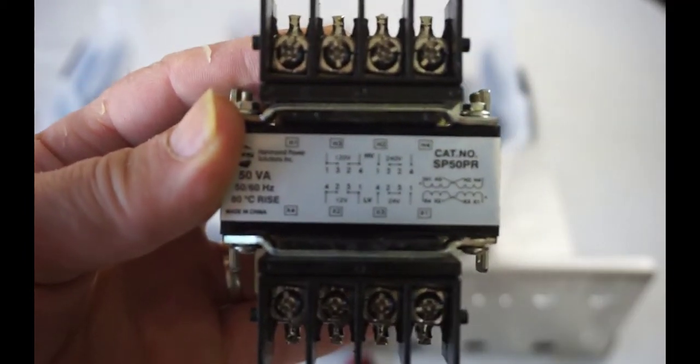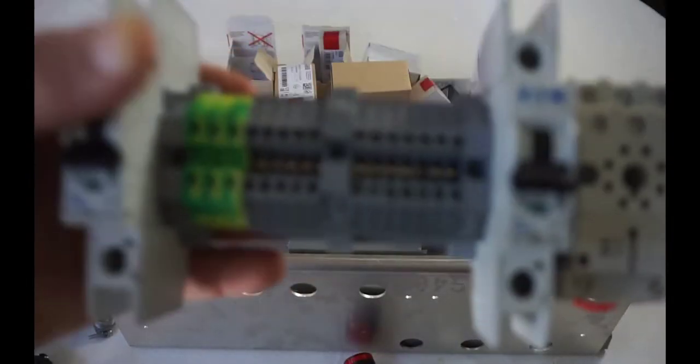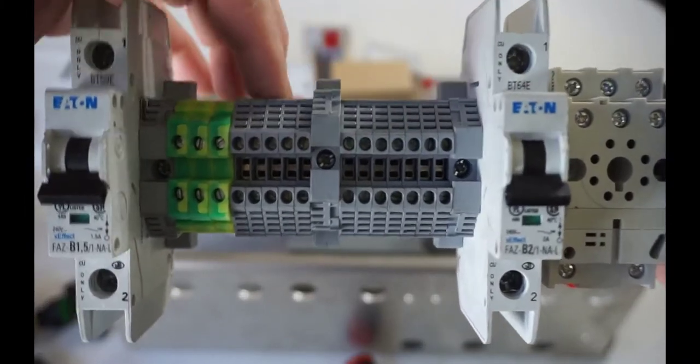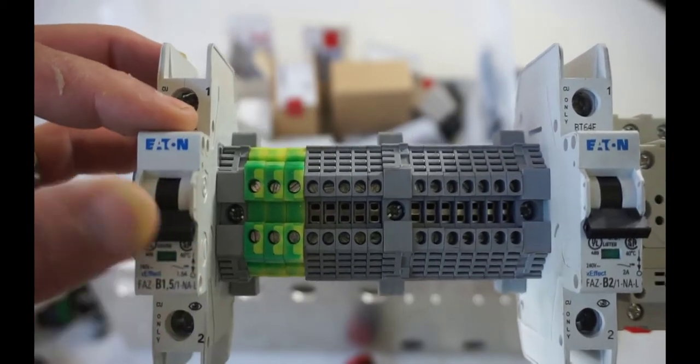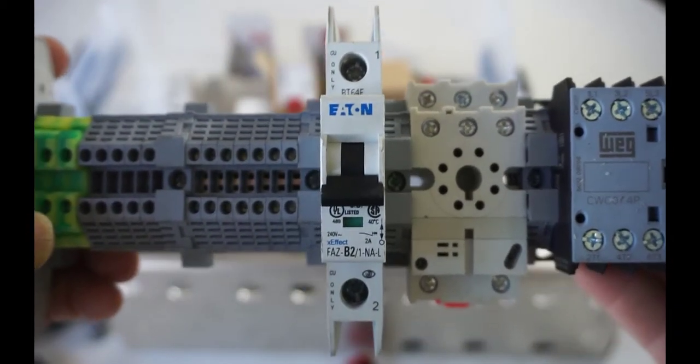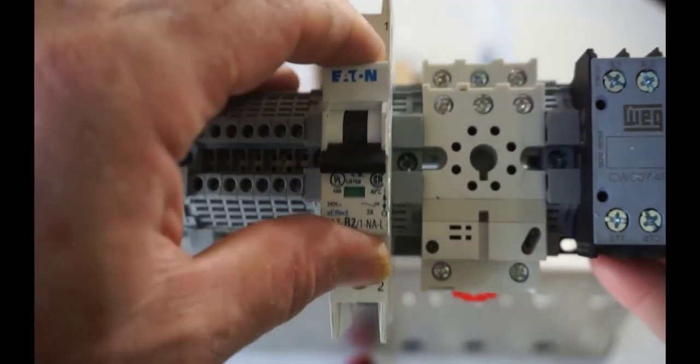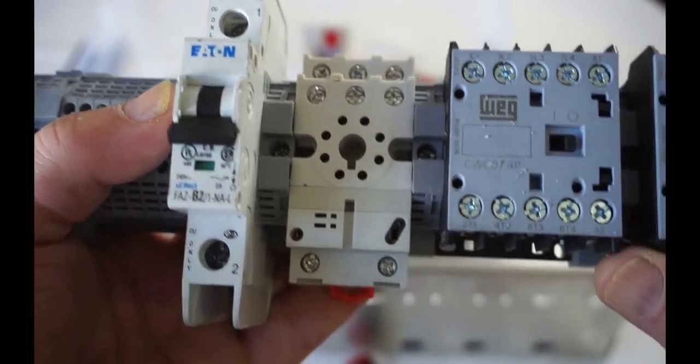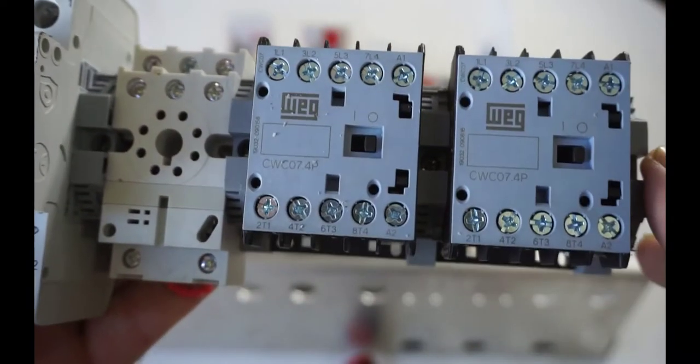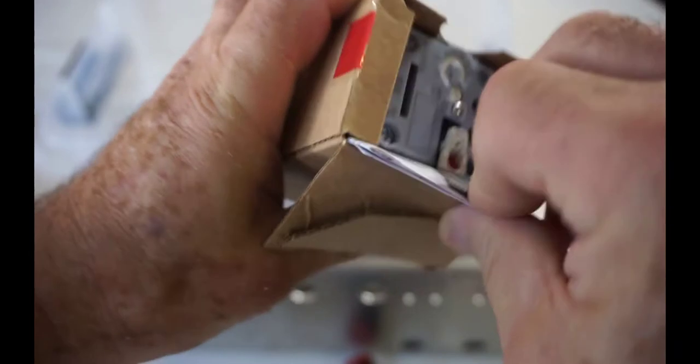You'll have terminal blocks, terminal block end stops, grounding blocks. This is your line circuit breaker, one and a half amp line circuit breaker, and then it looks like about a two amp secondary for the control. You've got a socket for your little ice cube relay, a couple of contactors here.